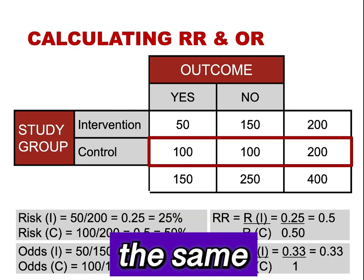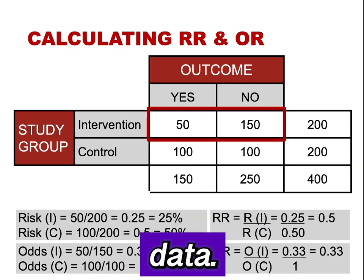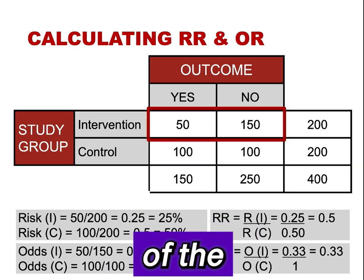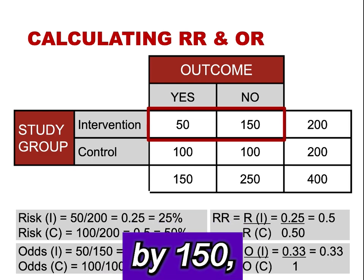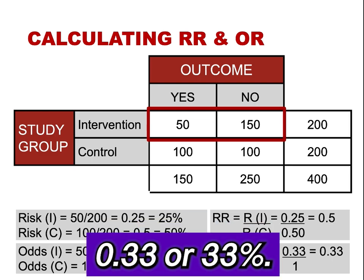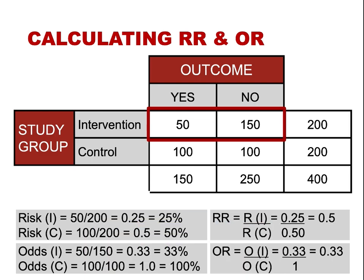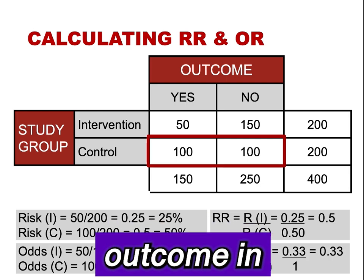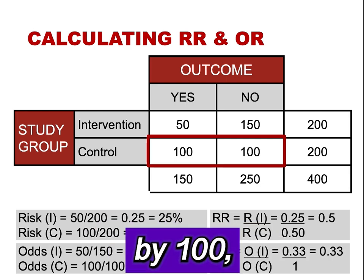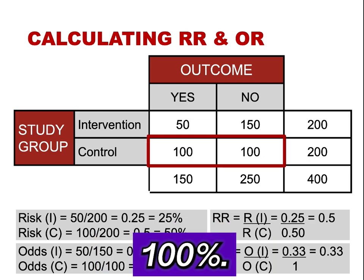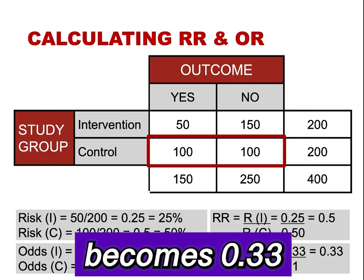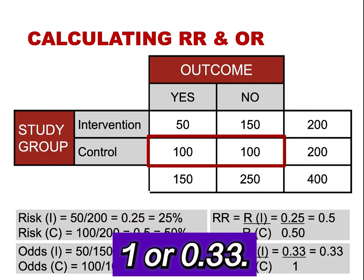Now let's look at the odds ratios using the same data. The odds of the outcome in the intervention group is 50 divided by 150, which equals 0.33, or 33%. The odds of the outcome in the control group is 100 divided by 100, which equals 1, or 100%. The odds ratio becomes 0.33 divided by 1, or 0.33.